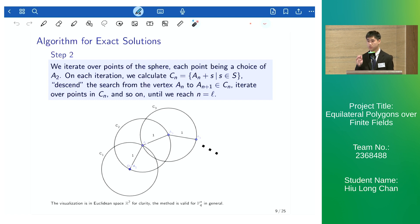And then we descend the search from the vertex A_2 to A_3, iterate over the points in C_3 and so on, until we reach n equals to l.